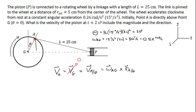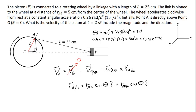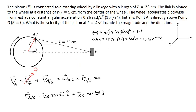The position of A with respect to G equals RAG — the 5 centimeters given — times sine of theta in the i-hat direction, plus RAG cosine theta in the j-hat direction. I have to be careful with signs: I'll write negative omega AG in the k-hat direction crossed with the position of A with respect to G, making that substitution here. Now let's do the cross product.